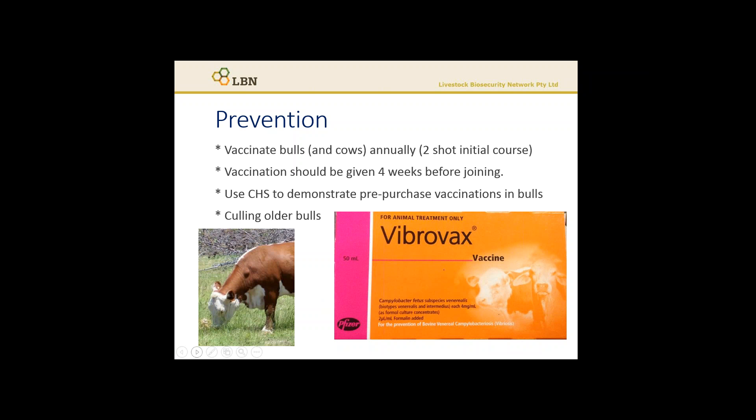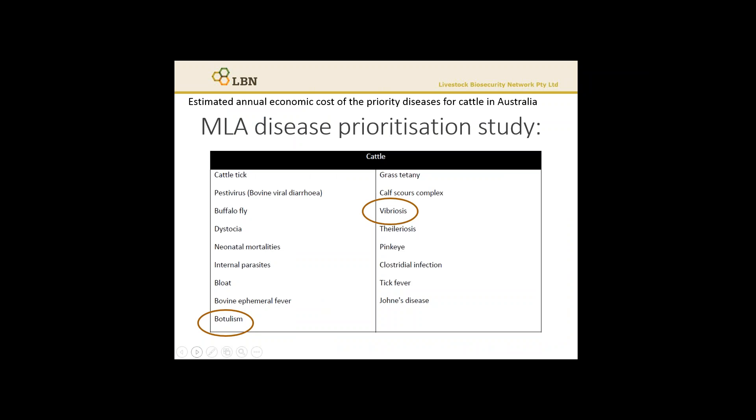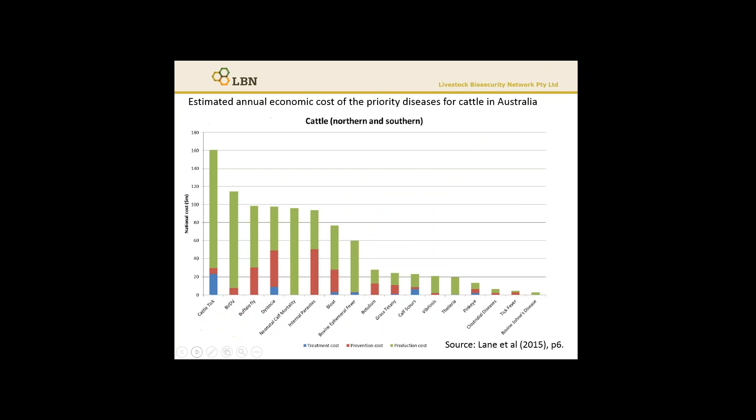In a herd where Vibrio is present, eradication is possible. We're not going to cover this today, but there is a fact sheet available, and you can contact me if you'd like more information on that. On this slide, I'll draw your attention to some of the diseases highlighted in the recent MLA disease prioritization study. You'll see both botulism and Vibriosis are diseases raised in this study, with both a prevention cost and a production cost associated with the disease. For Vibriosis, the prevention cost — or cost of vaccination — is much lower than the production cost, or the potential for losses if the disease occurs in the herd.